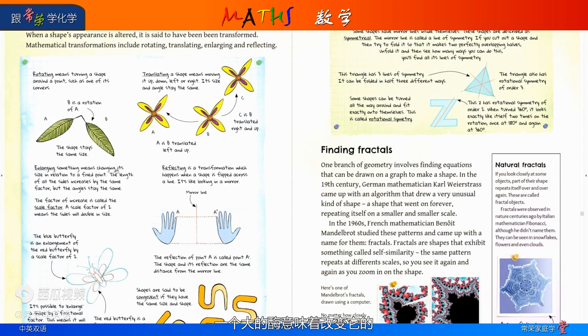Enlarging something means changing its size in relation to a fixed point. The length of all the sides increases by the same factor, but the angles stay the same. The factor of increase is called the scale factor. A scale factor of 2 means the sides will double in size.